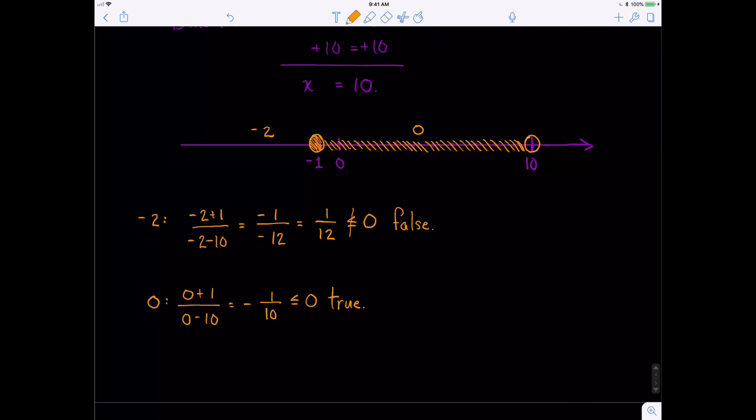And we should always check our last region as well. So let's try 11 in this last region. So when I have 11, I would go 11 plus 1 over 11 minus 10. This is going to give me 12 over 1, which is just 12. And 12 is clearly just not less than or equal to 0. So this is false, and we do no shading in this region.